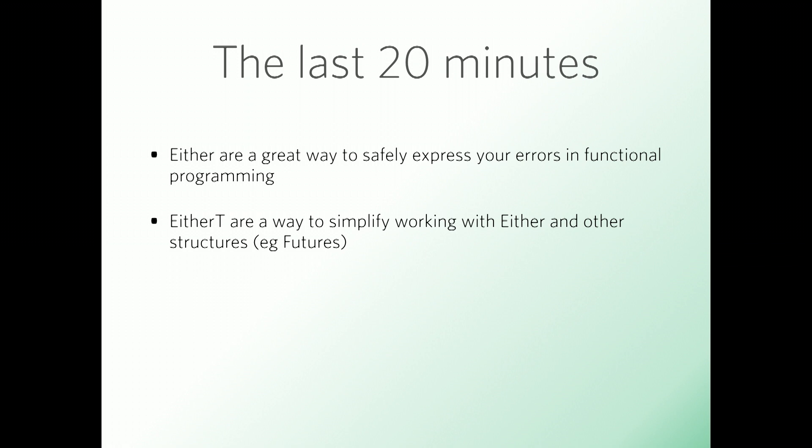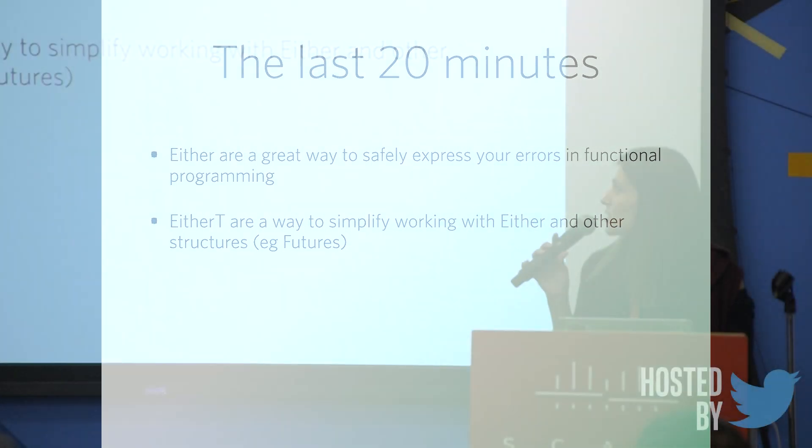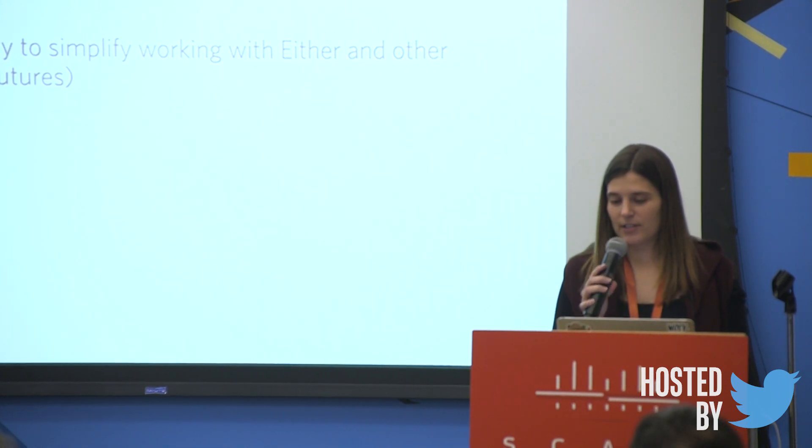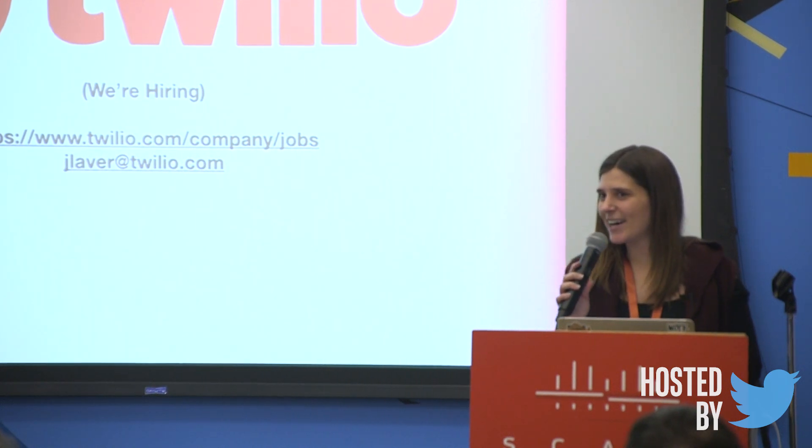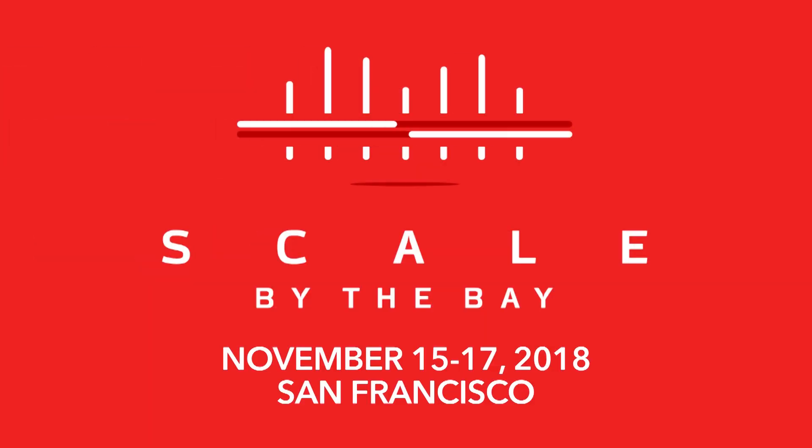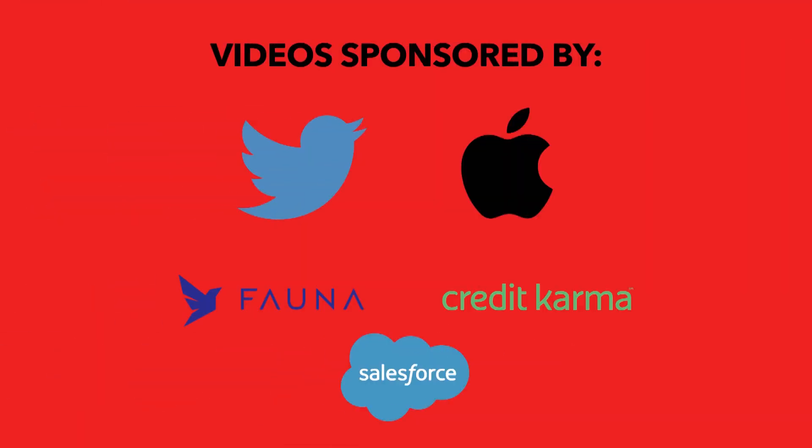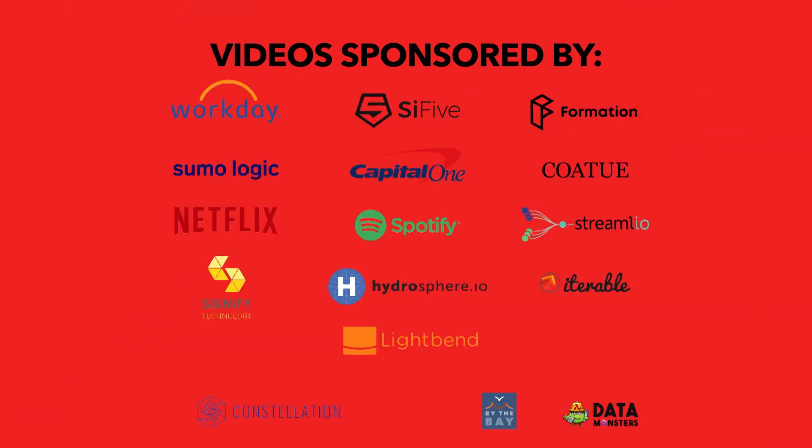So either T's aren't the only monad transformer that exists. There are other, there's also option T's, writer T's, and some other ones. Which once you understand one, these all sort of become a lot easier to use. You're also not limited to using eithers for error handling. However, it's a great way to express errors in functional programming. Either T's are simply a way to make working with eithers and other structures such as futures a little bit easier. All right, that's it for the talk. If you have any questions, I'll be somewhere around at this. Thank you. Thanks so much.